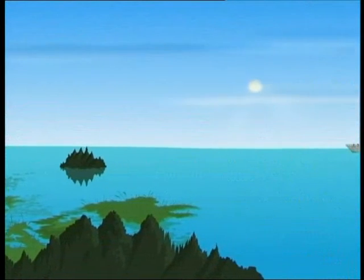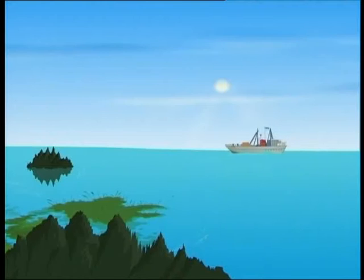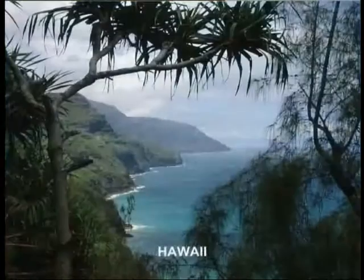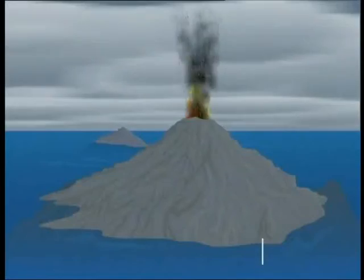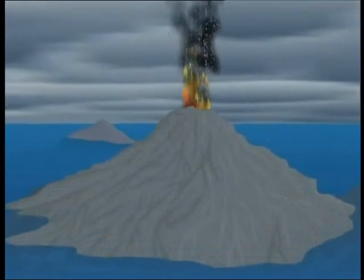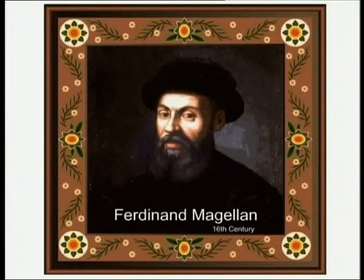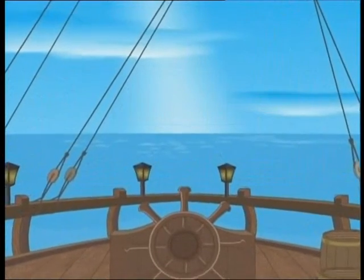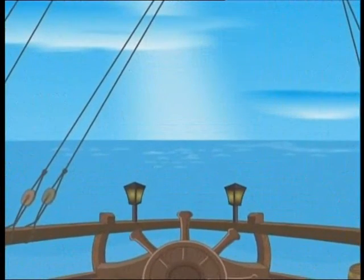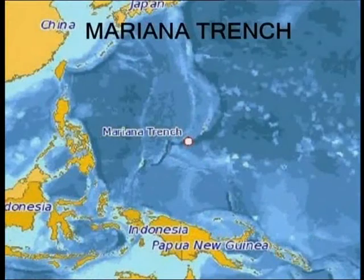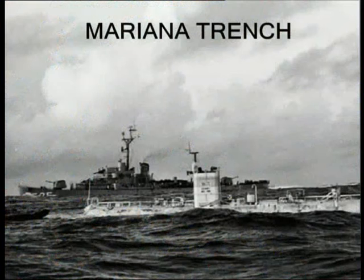Now let us see some of the interesting facts that surround the Pacific Ocean. Mauna Kea is a volcano that rises from the Pacific Ocean floor to form the big island of Hawaii. Measured from its base, it is 9.6 kilometers tall, which is taller than Mount Everest. Ferdinand Magellan was a famous 16th century around-the-world explorer. As he traveled to the Pacific, he found it peaceful and soothing, so he named the ocean Pacific. The deepest point on the Earth is Challenger Deep in the Mariana Trench — it is 11 kilometers deep.